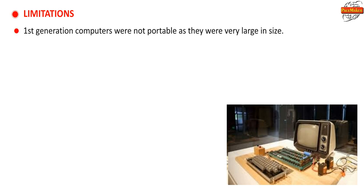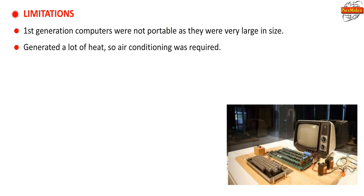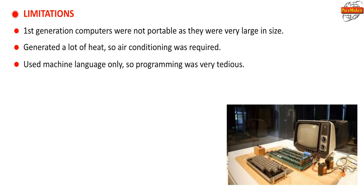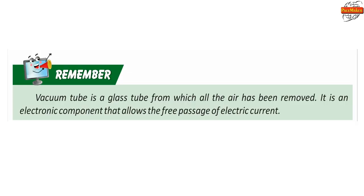Limitations: First generation computers were not portable as they were very large in size. They generated a lot of heat, so air conditioning was required. They used machine language only, so programming was very tedious. They had less storage capacity and were unreliable. Remember: a vacuum tube is a glass tube from which all the air has been removed — an electronic component that allows the free passage of electric current.